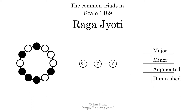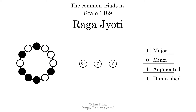Here are the common triads present in this scale. The diagram in the center is a graph of parsimonious voice leading between triads. There is one major triad. There are no minor triads. There is one augmented triad. There is one diminished triad.